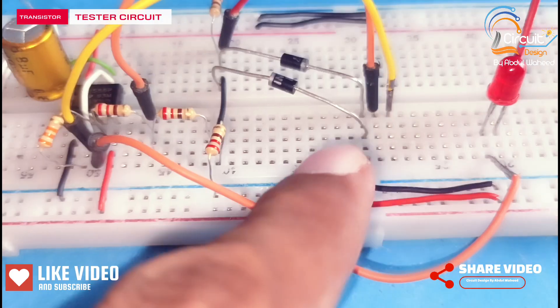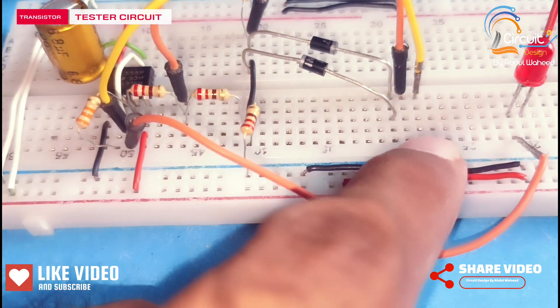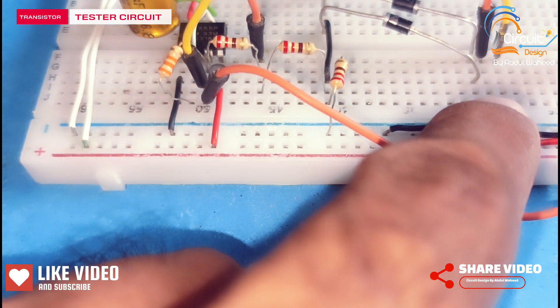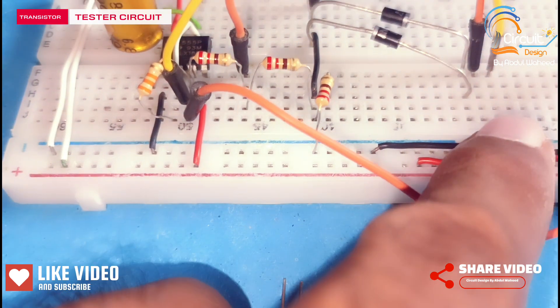You can see here I use three lines for the transistor: first line is for collector, second for base, and third for emitter.